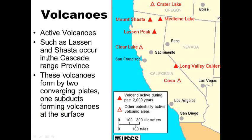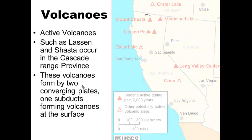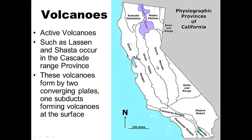Volcanoes — California gets it all: earthquakes, volcanoes, tsunamis. Active volcanoes such as Lassen and Mount Shasta occur in the Cascade Range. These volcanoes formed by two converging plates. The San Andreas Fault goes out to sea around northern California, and off the coast there's a plate being subducted — pushed underneath the North American Plate. This subduction zone creates volcanoes at the surface above it, like Lassen and Mount Shasta.